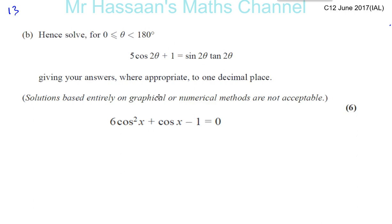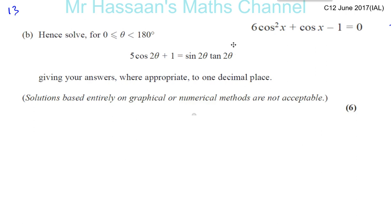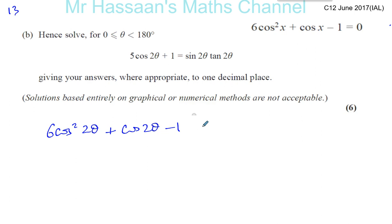So we can just apply what we've just learned. If 5cos(x) + 1 = sin(x)tan(x) gives you 6cos²(x) + cos(x) - 1 = 0, then this will also give you something similar in the same format — you just replace x with 2θ. So this becomes 6cos²(2θ) + cos(2θ) - 1 = 0.